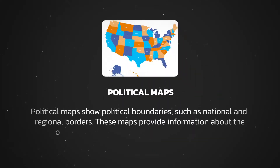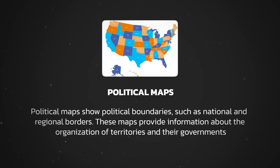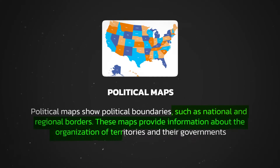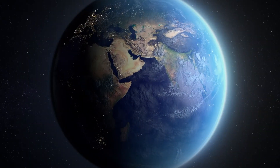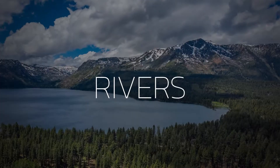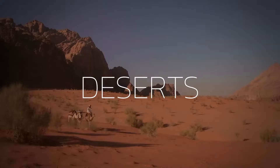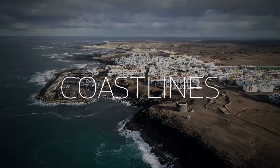Political maps show political boundaries such as national and regional borders. These maps provide information about the organization of territories and their government. Physical maps show the natural features of the earth's surface such as mountains, rivers, lakes, deserts, and coastlines.